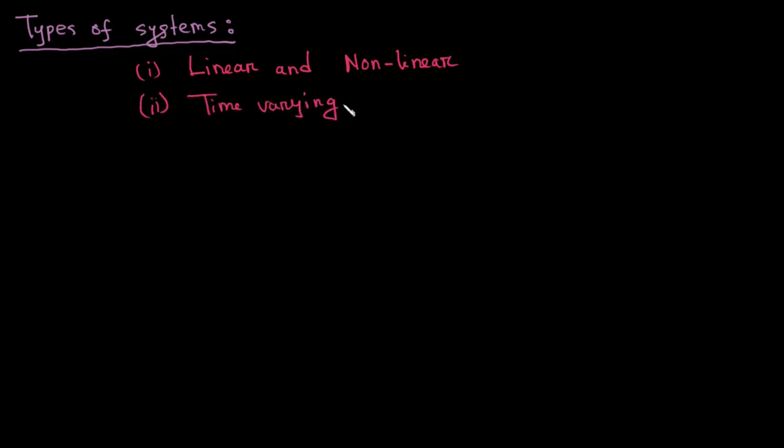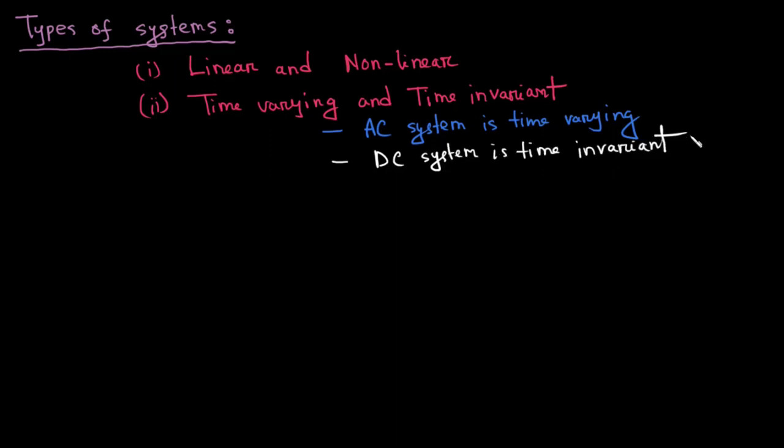Now, depending on the properties of systems, systems can be classified as linear and non-linear system, time varying and time invariant system. If a system's output changes with time is called a time varying system. For example, AC system. On the other hand, if a system's output does not change with time is called a time invariant system. For instance, DC system is a time invariant system. And the final one is deterministic and random system.